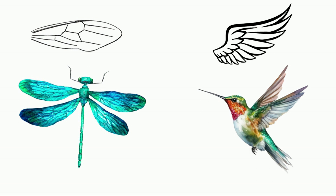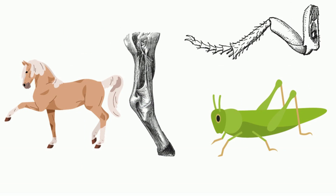Another example is the leg of a horse and the leg of a grasshopper. The grasshopper is an insect and has a segmented leg with an exoskeleton, while the horse is a mammal with joints, tendons, and ligaments. Although the legs are structurally different, they carry out a similar function.